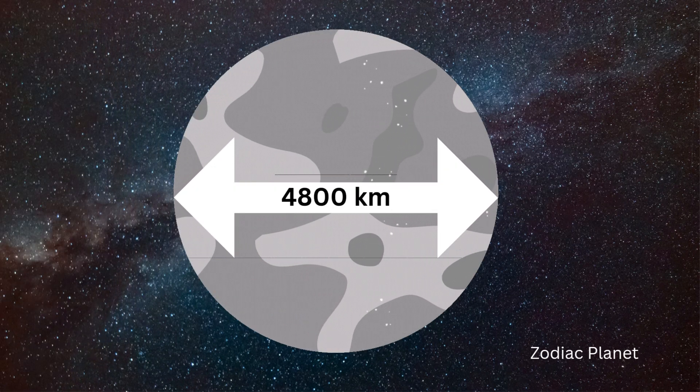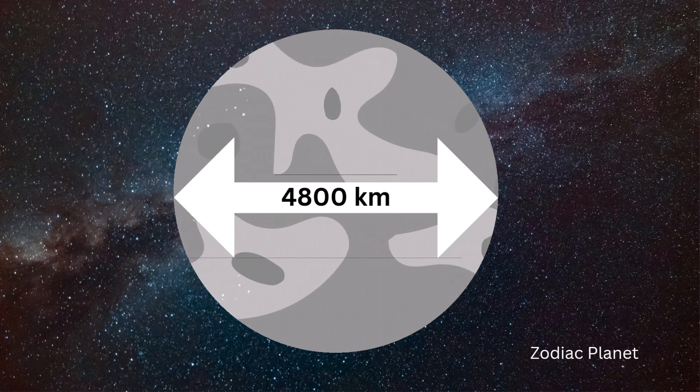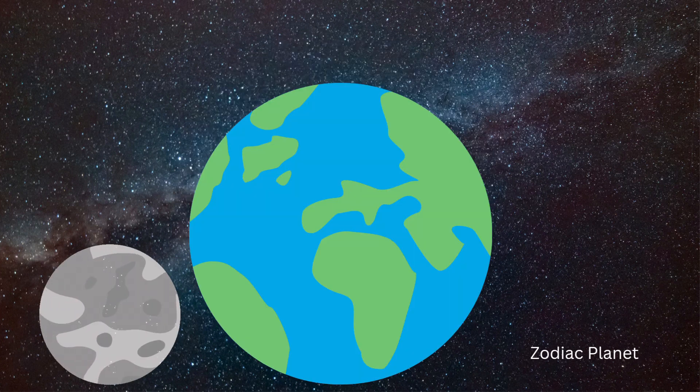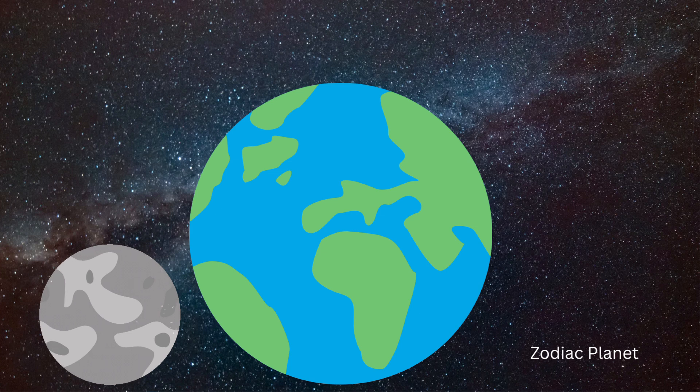Mercury is only about 4,800 kilometers in diameter, which is about a third of the size of Earth, making it the smallest planet in our solar system.